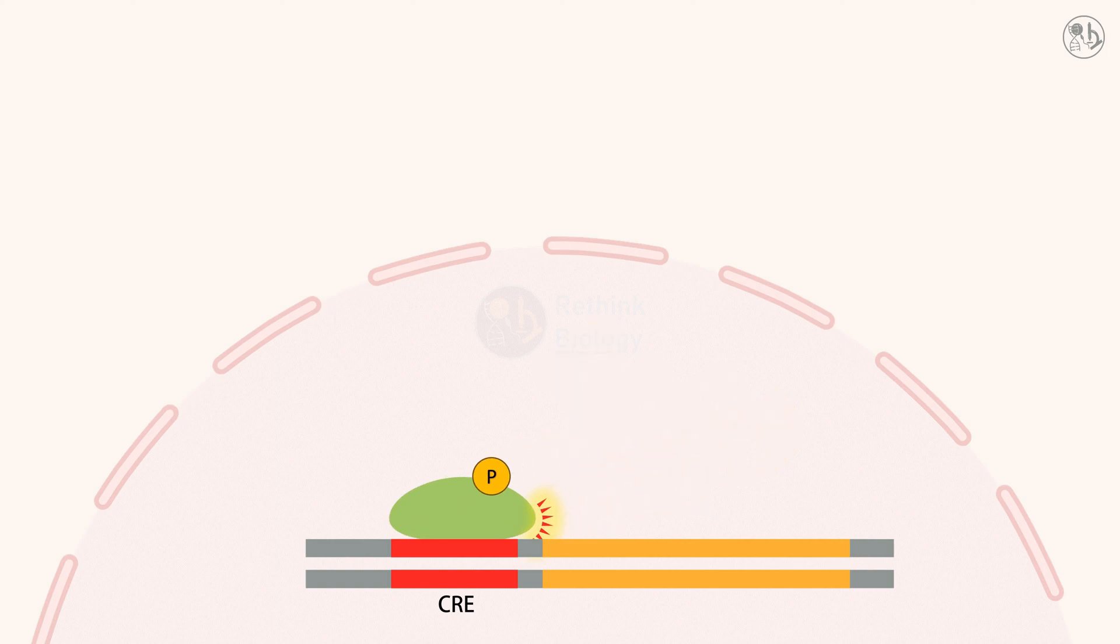CRE then recruits another protein called CBP, which stands for CREB binding protein. CBP is a co-activator which means it helps CREB to stimulate the transcription of the genes that are controlled by CREB.